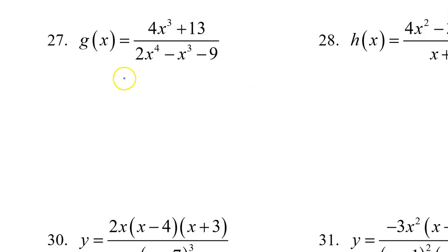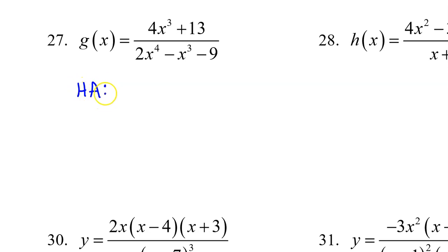Number 27: when the degree of the denominator is greater, there is a horizontal asymptote, and it is always y equals 0.